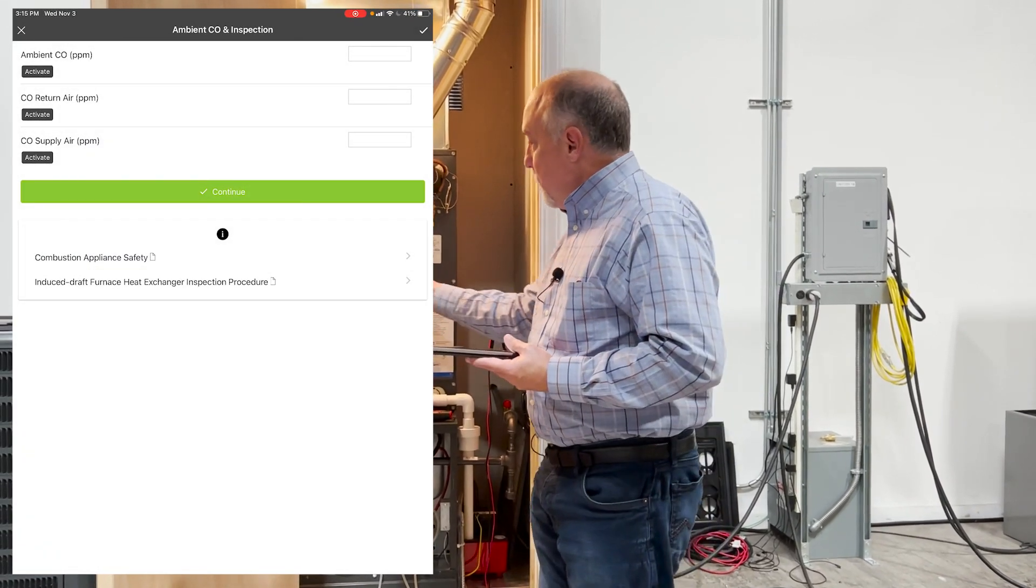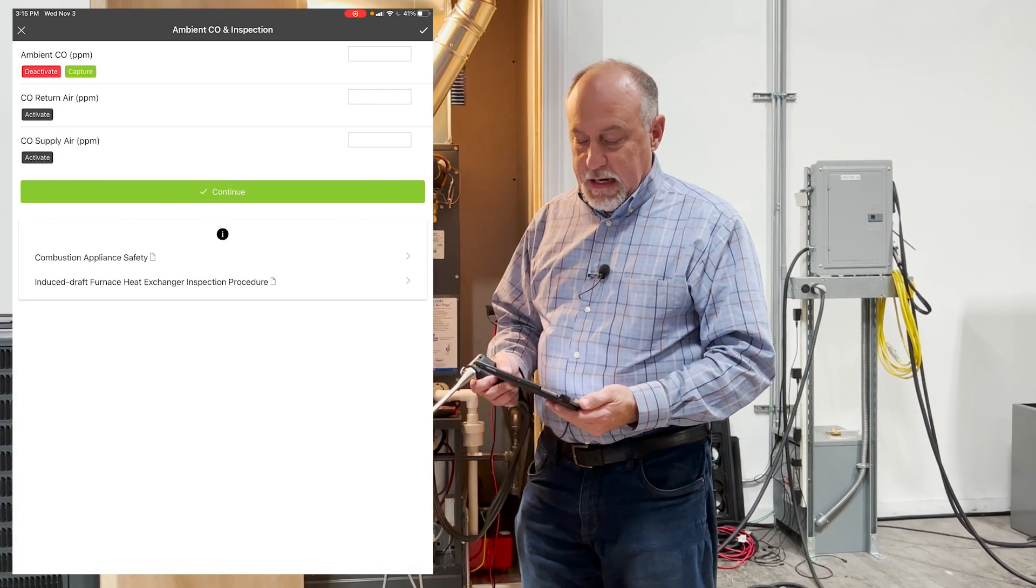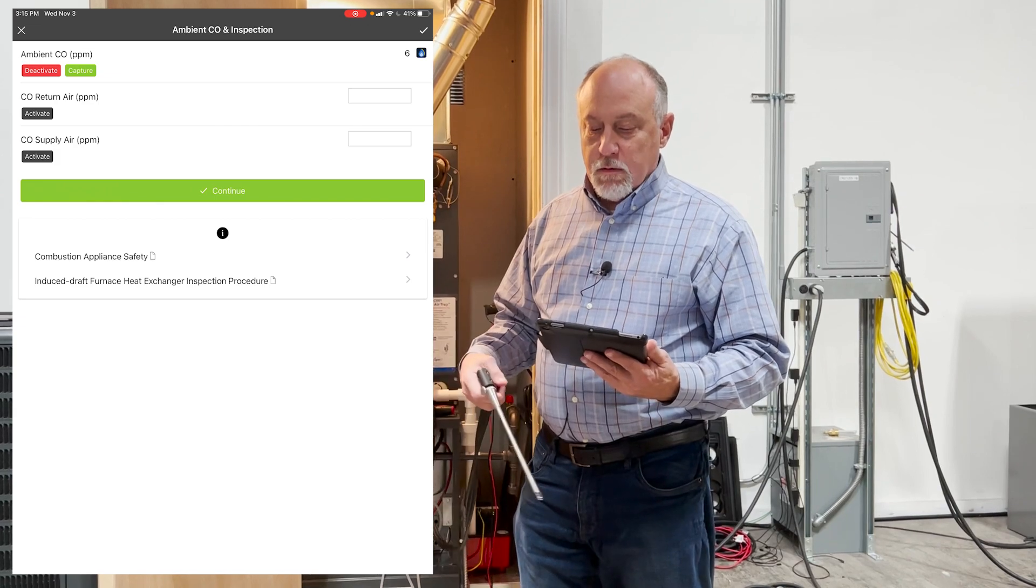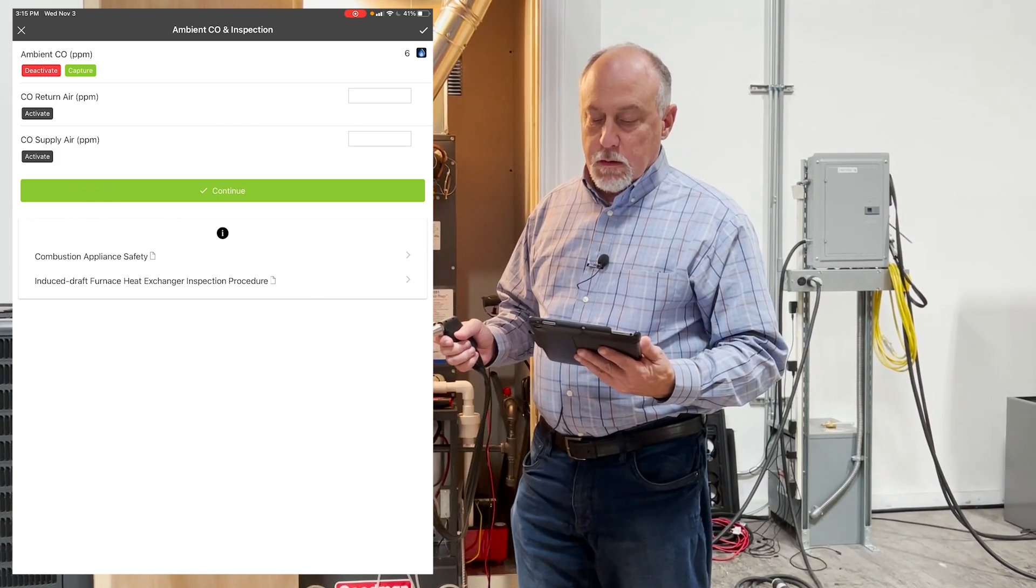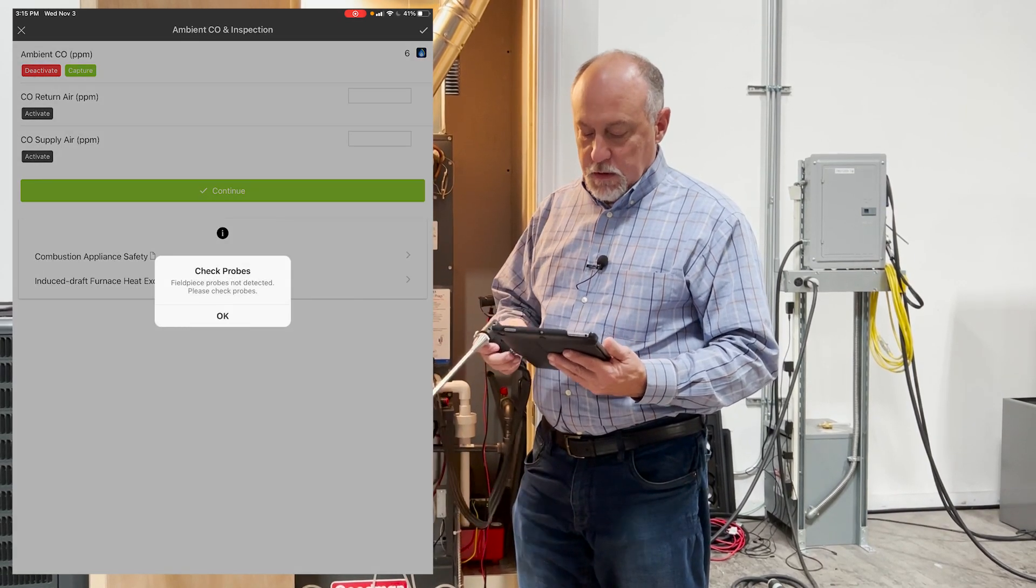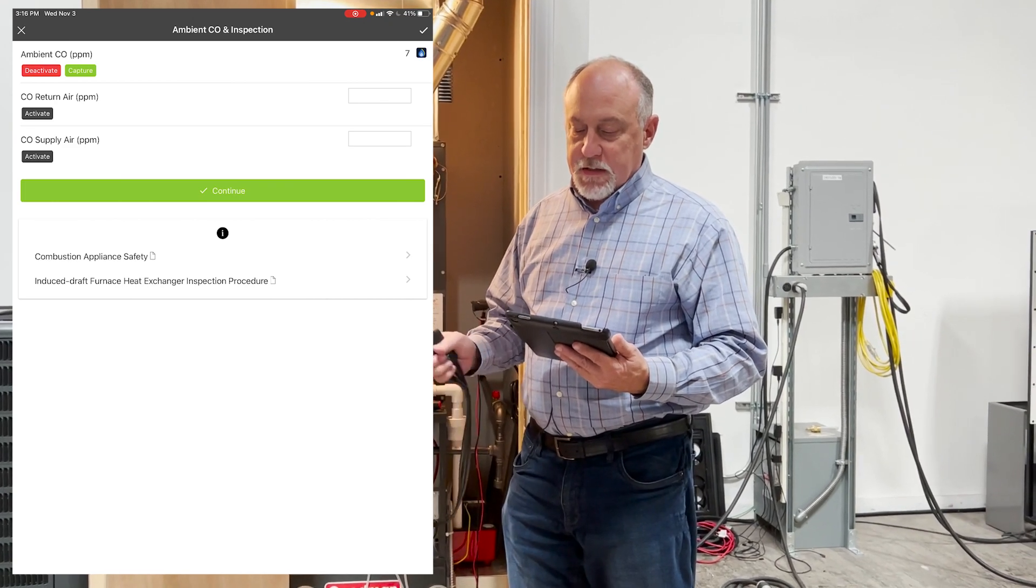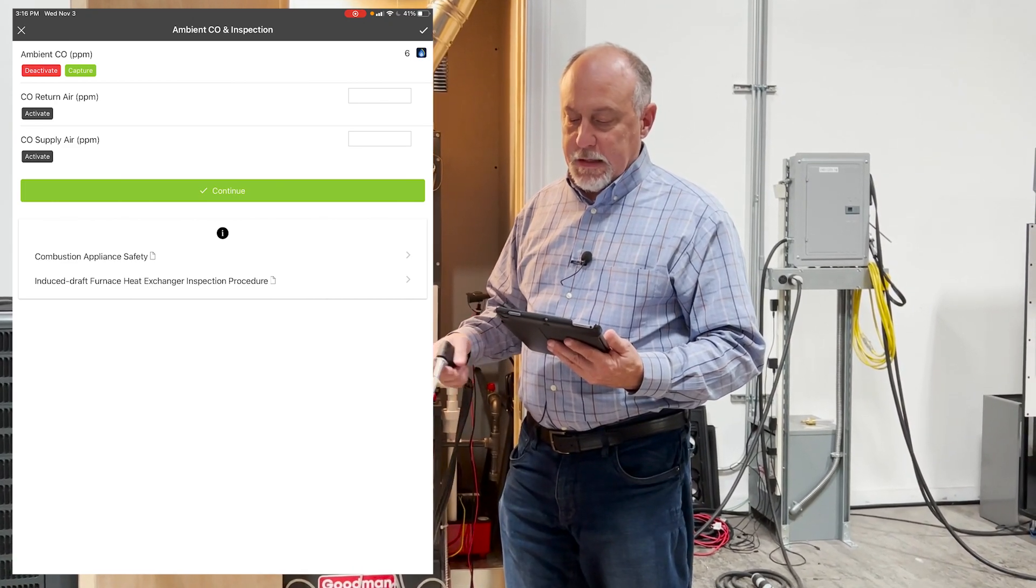So the first thing we want to do, I'm going to pull this out of the stack. I'm going to go ahead and activate this, and we're going to get an ambient CO measurement. And you'll see, actually we've got a couple parts per million here of CO in the space. We'll see if that clears out here in just a second. So it might just be a little bit of residual flue gas from the stack here.